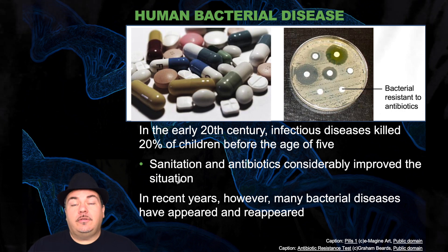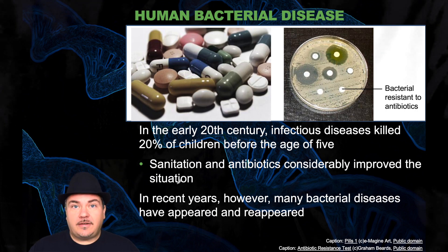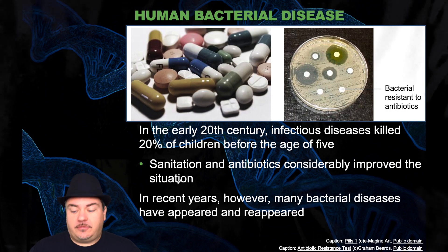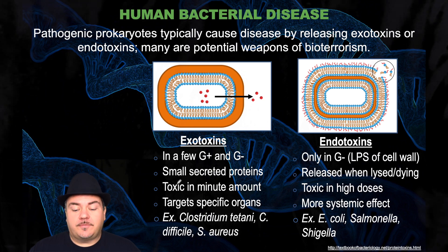In the early 20th century, infectious diseases killed 20% of children by the age of five. Sanitation and antibiotics considerably improved this situation. In recent years, however, many bacterial diseases have appeared and reappeared. Pathogenic prokaryotes typically cause disease by releasing exotoxins or endotoxins, and some of these are potential weapons of bioterrorism.